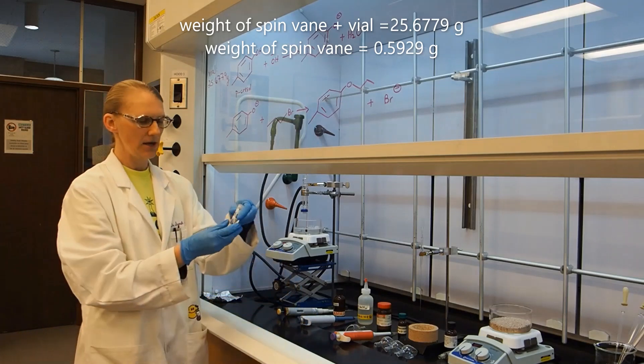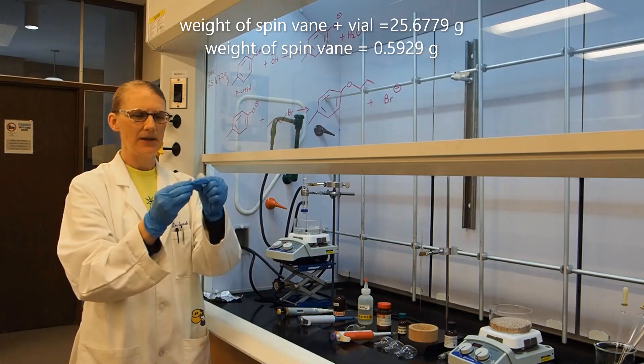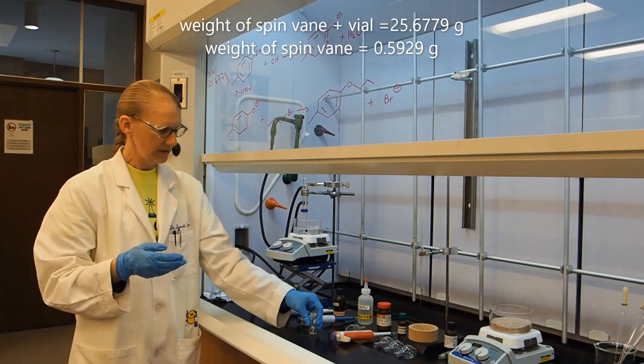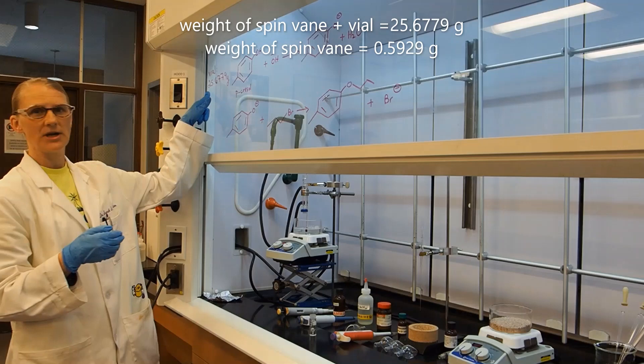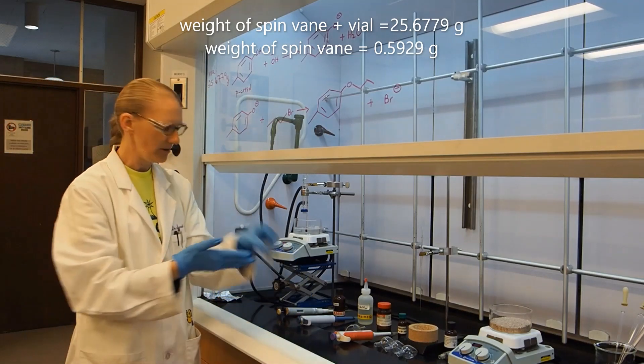I have already weighed a conical vial with p-cresol and a magnetic spin vane inside. Together the vial and the spin vane weigh 25.6779 grams. I did that off camera.